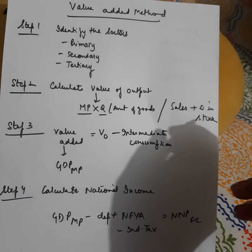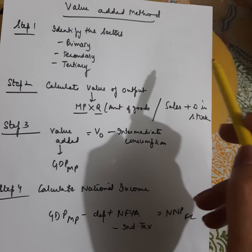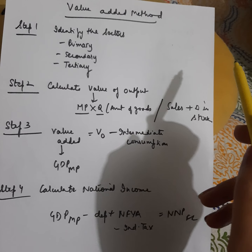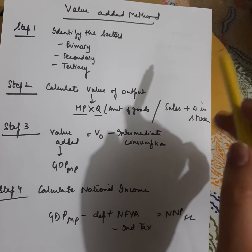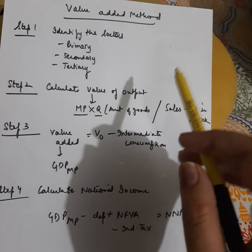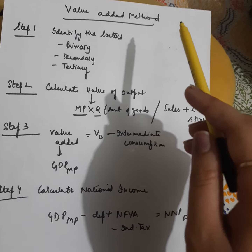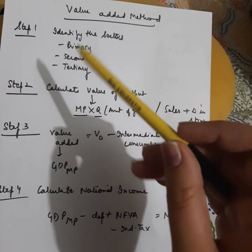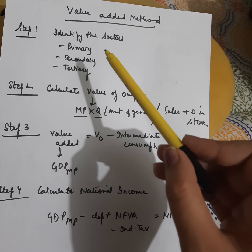In the previous video we completed the income method and the expenditure method. Now we'll be covering the theory of the value-added method. The first step you have to follow while calculating national income using the value-added method is to identify the sectors.